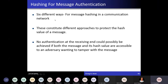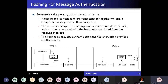There are six different ways to achieve message authentication over the communication network. These six different ways use a combination of the hash function as well as encryption-decryption. The first method is called symmetric key encryption-based schemes, in which from a given message the hash value of that message is calculated and concatenated with the message. Both the message and hash value are then encrypted.